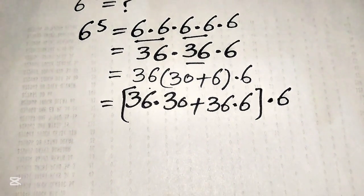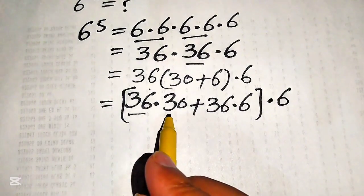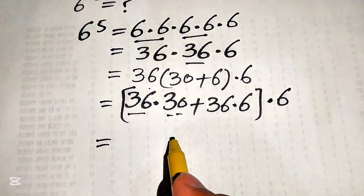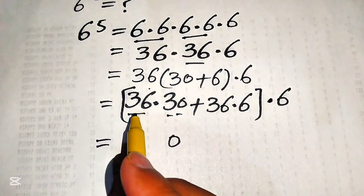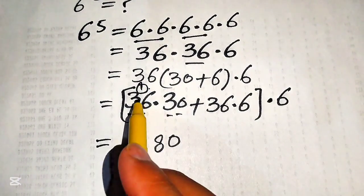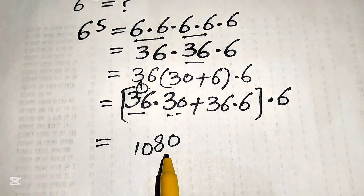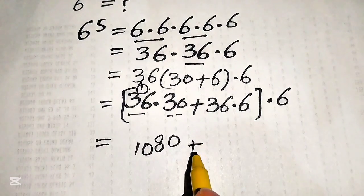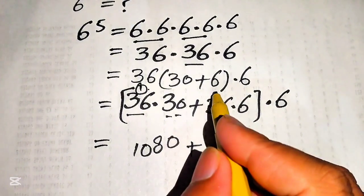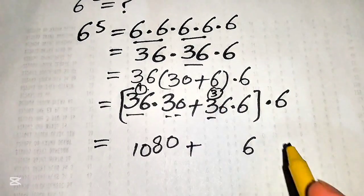In the next step we multiply these two values. We can consider this a one-digit number times a two-digit number. When we multiply 0 times this number we get 0; when we multiply 3 times this number we get 3×6 = 18, write 8 carry 1; 3×3 = 9, plus 1 becomes 10. So we get 1080.